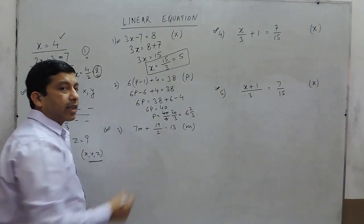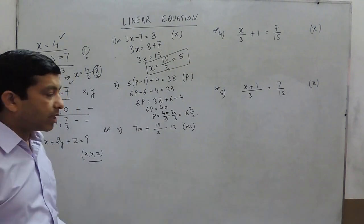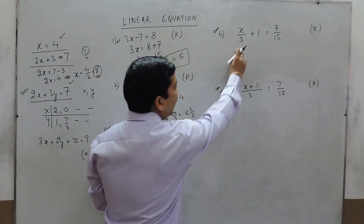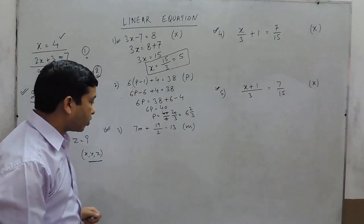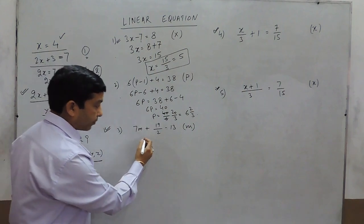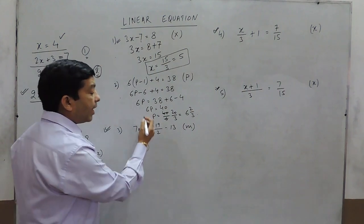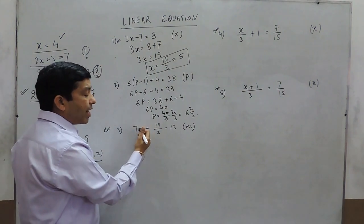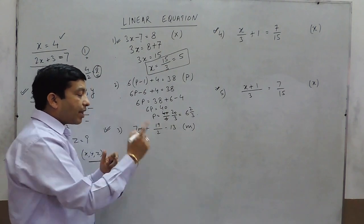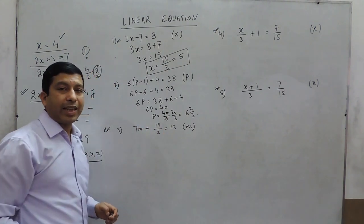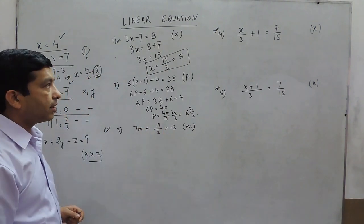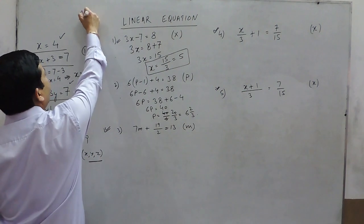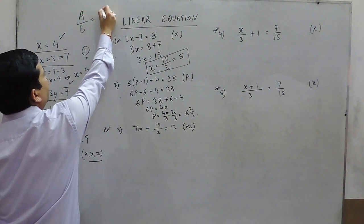Questions without fractions are simpler. For the questions where fractions are used, the one key method is cross multiplication. Cross multiplication is only applicable when the equation is in the format: a upon b equals c upon d.